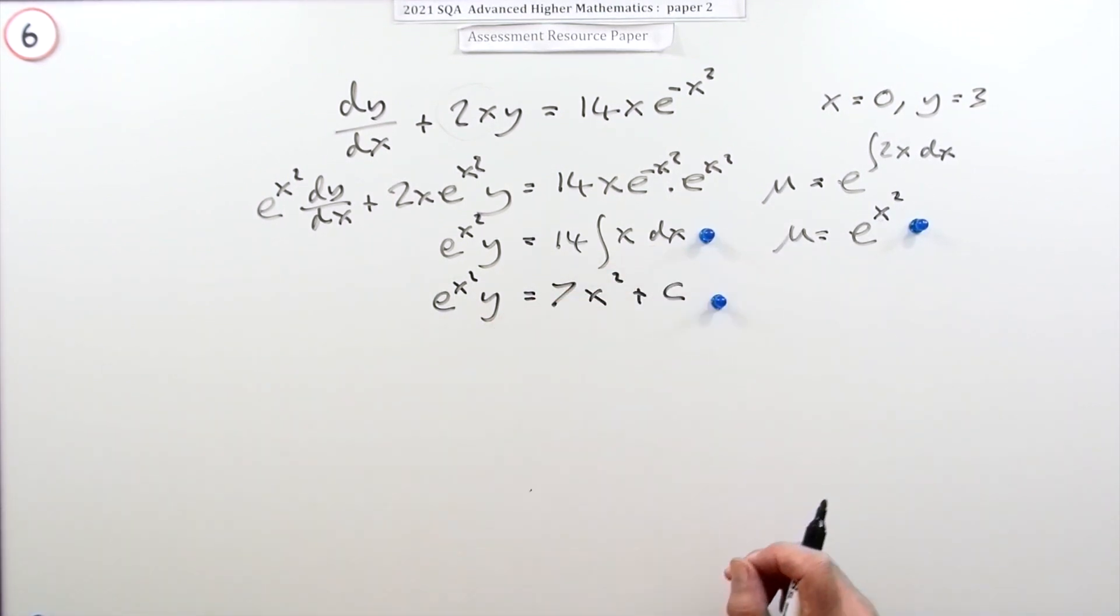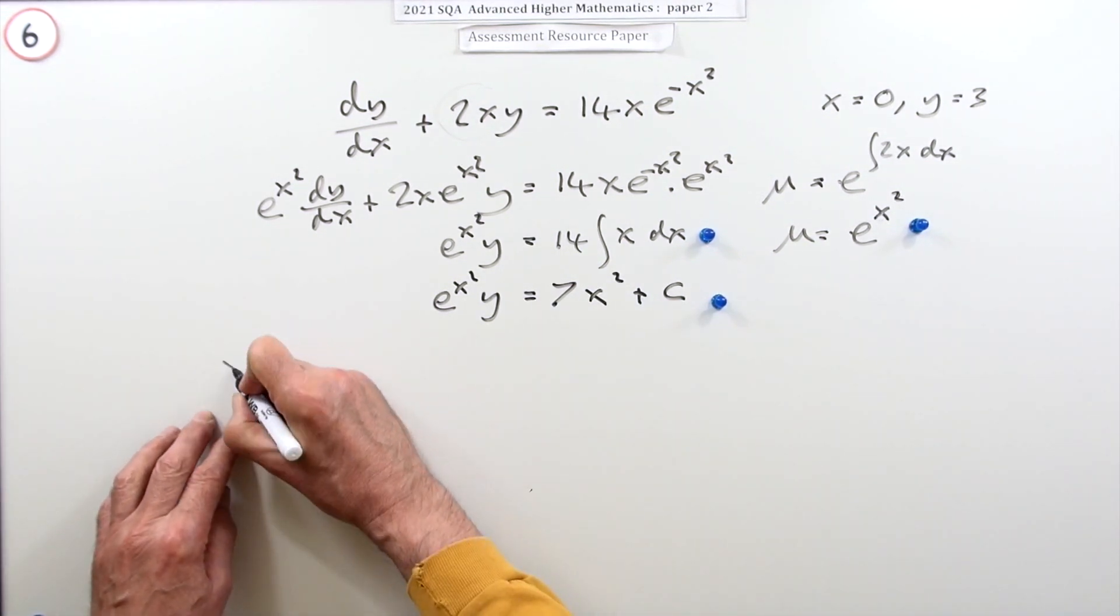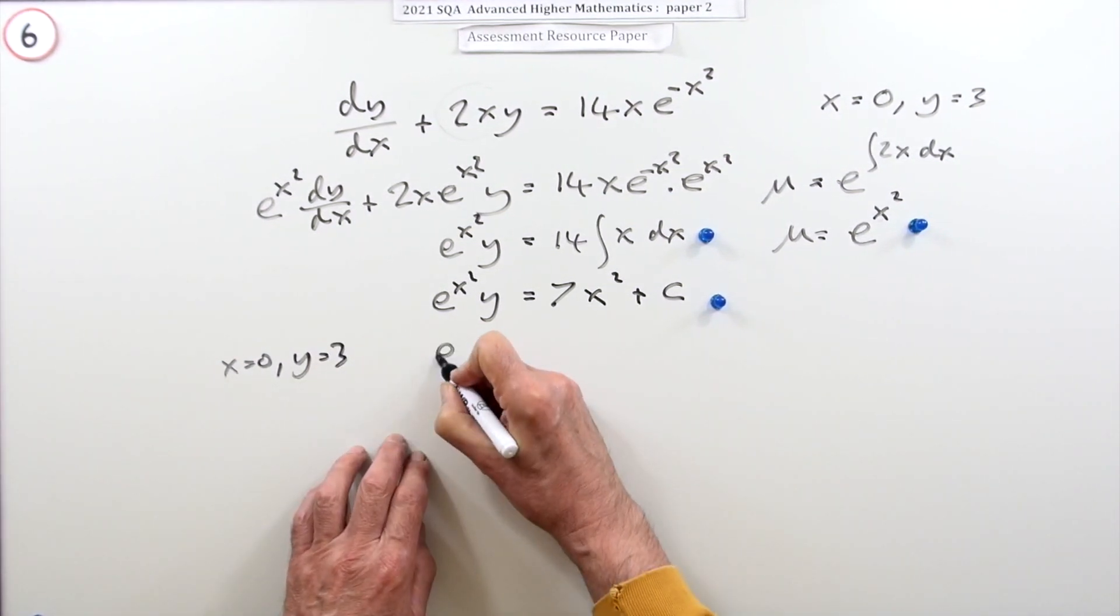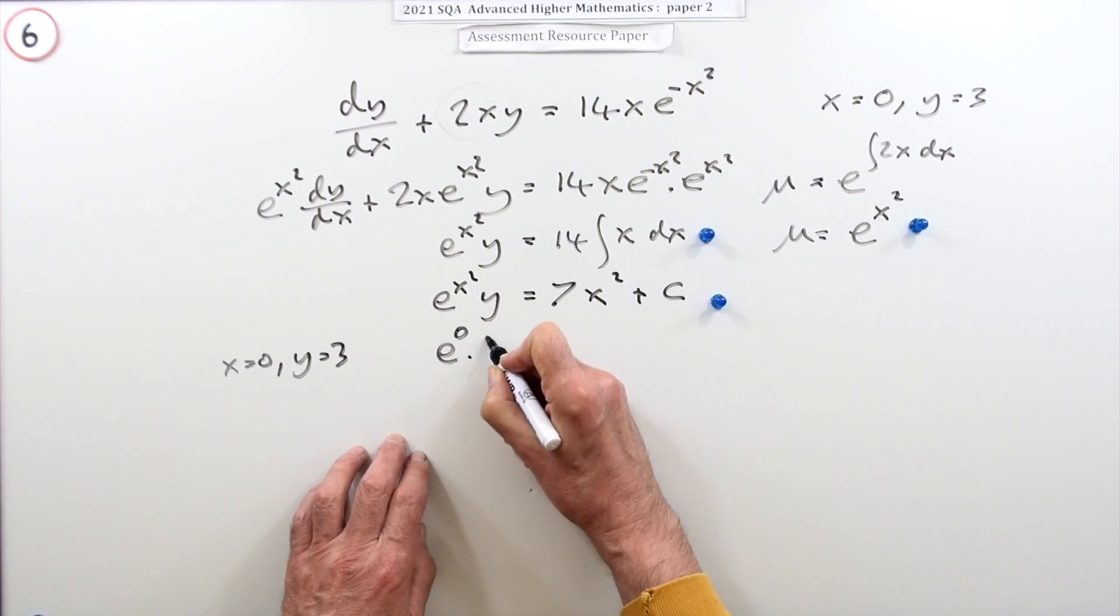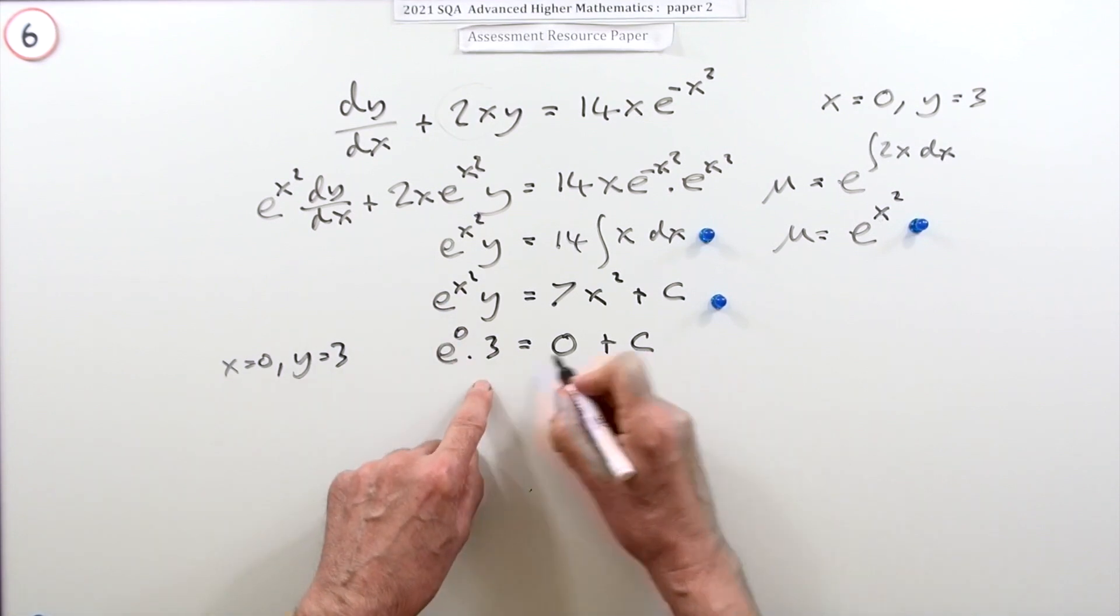Now you've got to find what c is. Working out c now before it gets enveloped in other calculations: when x is 0, y is 3, so e to the 0 times 3, that'll just be 0 plus c. E to the 0 is 1, so c is 3.